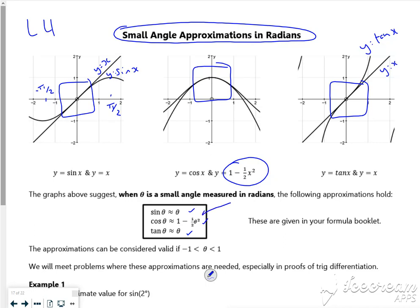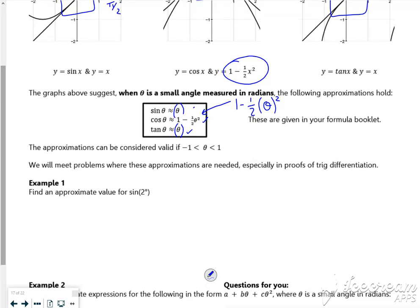Now one thing you have to be careful with is when you're subbing in. So I always get people to put the thetas in brackets. So when you sub it in, you know that it's going to work fine. Because people sub in and do it wrong. So it says it's valid from minus 1 to 1.